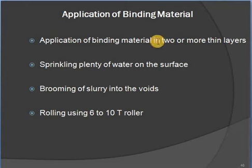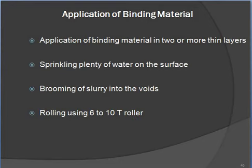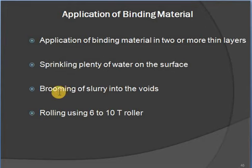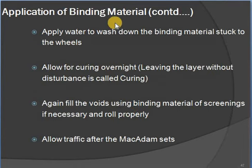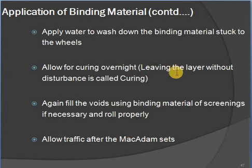Application of binding material: apply in 2 or more thin layers; sprinkle plenty of water on the surface; broom slurry into voids; roll using 6 to 10 tonne roller. Apply water to wash down the binding material stuck to the aggregates and allow curing overnight — leaving the layer without disturbance is called curing. If necessary, fill voids again with binding material and roll properly.